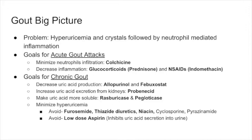We approach gout in two ways: treat acute gout attacks, and prevent chronic gout from causing acute attacks. For acute gout, the first goal is to minimize neutrophil infiltration using colchicine. The second is to decrease inflammation using glucocorticoids like prednisone, or NSAIDs — the most famous being indomethacin. So for acute gout: colchicine and steroids or NSAIDs.